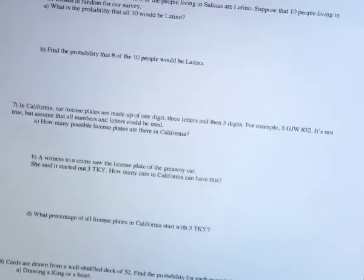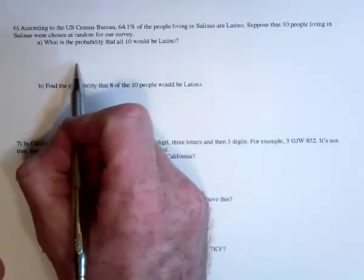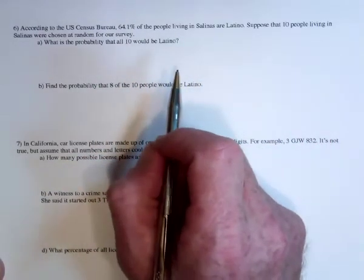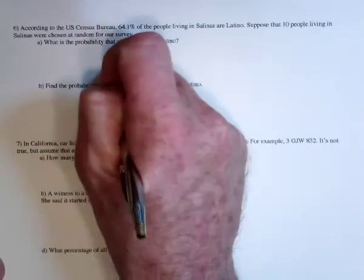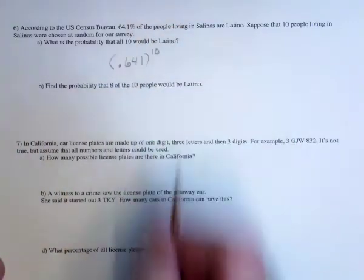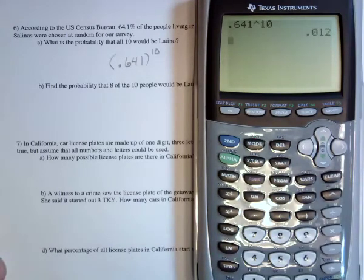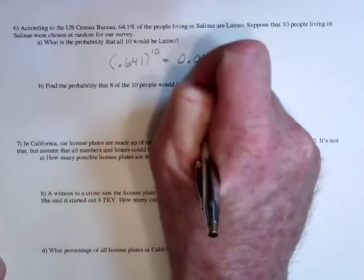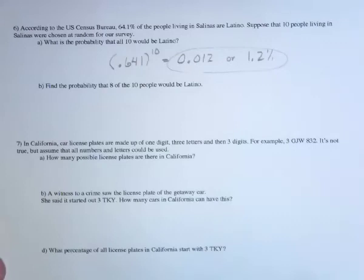On to the second page. So 64.1% of people in Salinas are Latino, and then if there's 10 people, what's the possibility all 10 are Latino? You could write out boxes for the 10 people, and the chances of each of them being Latino is 0.641, or you can just say 0.641 to be Latino and then do that 10 times in a row. So 0.641 raised to the 10th, the chances are 1.2%. It's pretty unlikely. In fact, it would be very unusual if all 10 people randomly chosen were Latino.